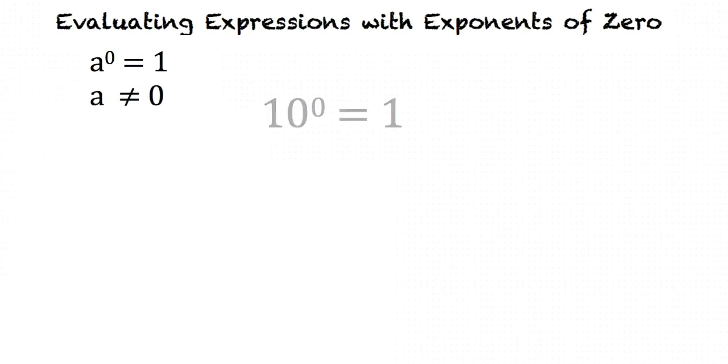For example, 10^0 = 1. Why is it 1 and not 0? A number being raised to the zero power is not being multiplied by zero. We should think of it as being used as a factor zero times.